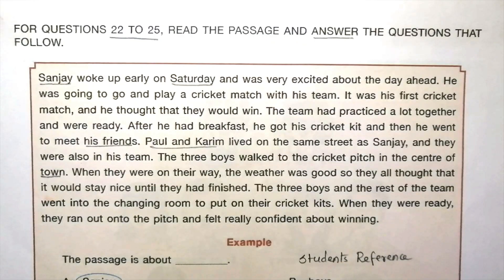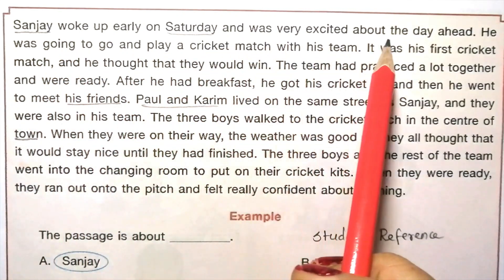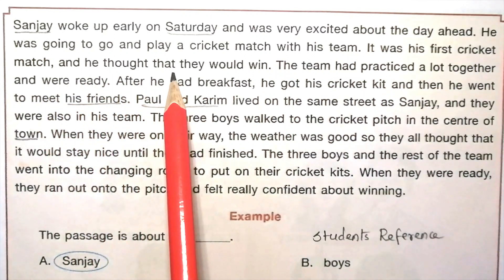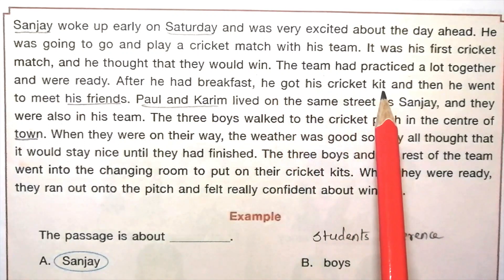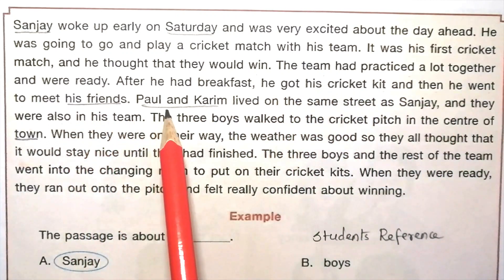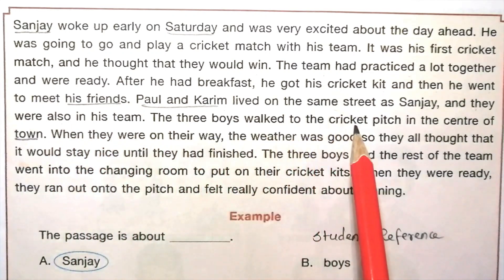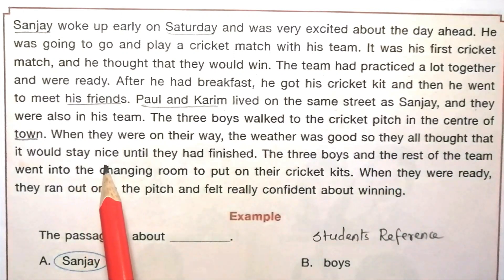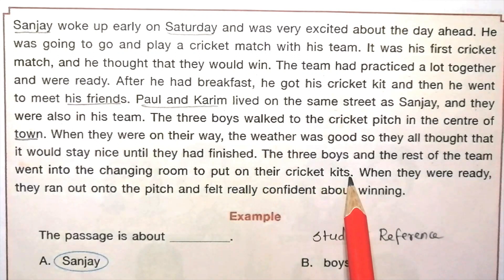For questions 22 to 25, read the passage and answer the questions that follow. Sanjay woke up early on Saturday and was very excited about the day ahead. He was going to play a cricket match with his team. It was his first cricket match and he thought that they would win. The team had practiced a lot together and were ready. After breakfast, he got his cricket kit and went to meet his friends. Paul and Karim lived on the same street as Sanjay and were also in his team. The three boys walked to the cricket pitch in the center of town. The weather was good, so they thought it would stay nice until they finished. The three boys and the rest of the team went into the changing room to put on their cricket kits. When they were ready, they ran out onto the pitch feeling really confident about winning.